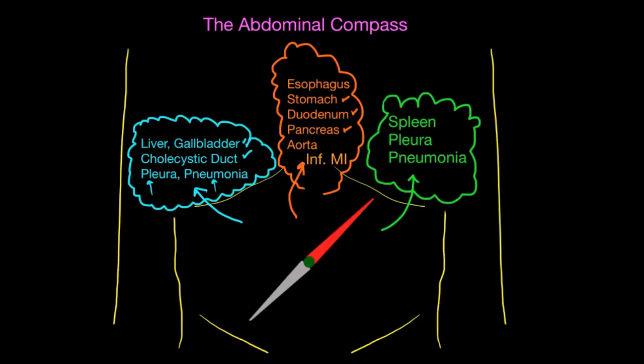In the left upper quadrant, think about what lives here. The spleen can be enlarged and cause pain; you can also have a splenic abscess or splenic infarction. We're also close to the diaphragm, so just above it is the pleura and lungs. A left lower lobe pneumonia, pleural effusion, or pleuritis can all cause pain in this area.